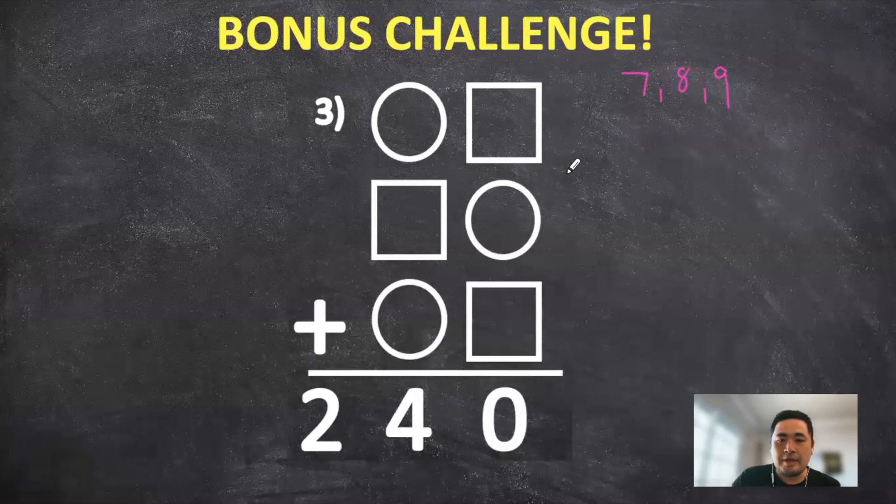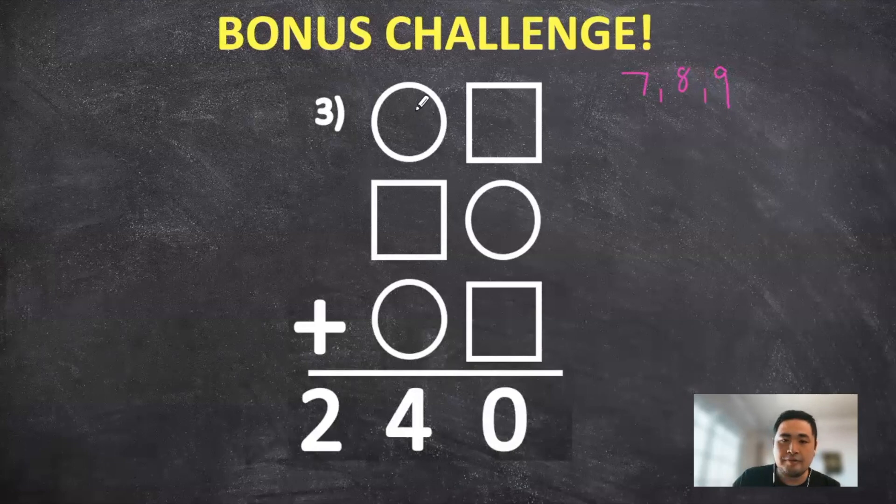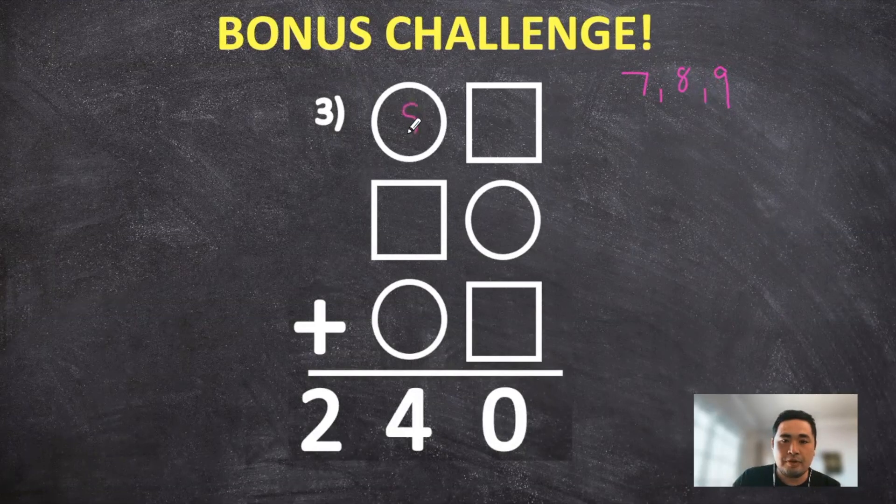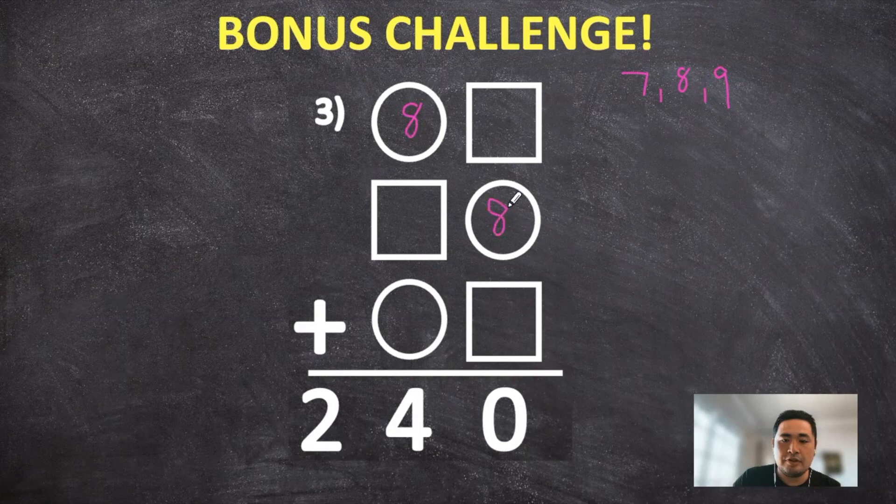And because I know for 80, if we add that three times, that's going to equal 240, I tried adding the 8 for the circle first. So if we put the 8 in for the circle.